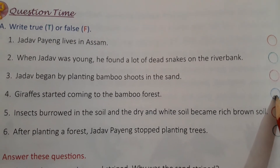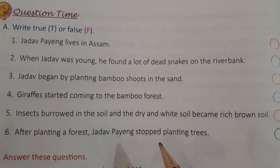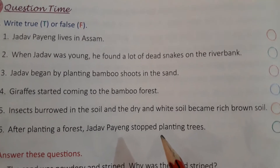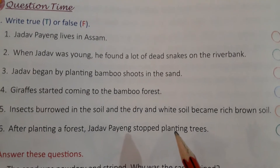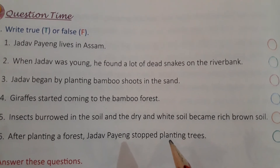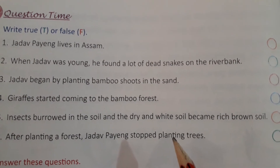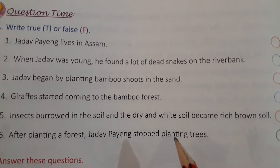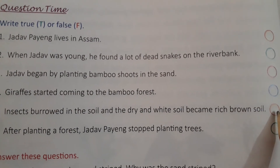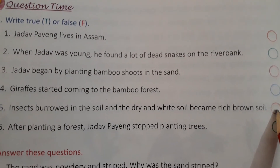Fifth sentence: Insects burrowed in the soil and the dry and white soil became rich brown soil. तो जो कीड़े थे वो मिट्टी के अंदर जा रहे थे और जो सूखी सफेद कलर की मिट्टी थी वो अच्छी सी brown कलर की मिट्टी हो गई थी. True — we will write T for true.